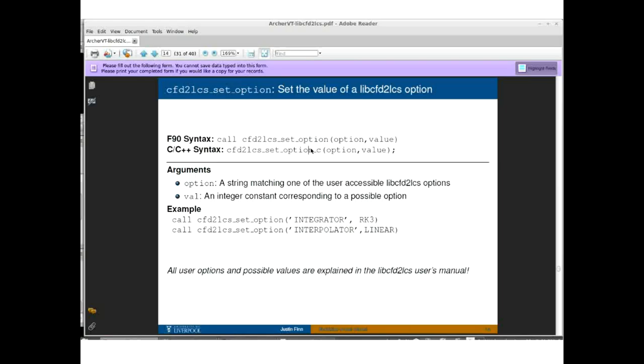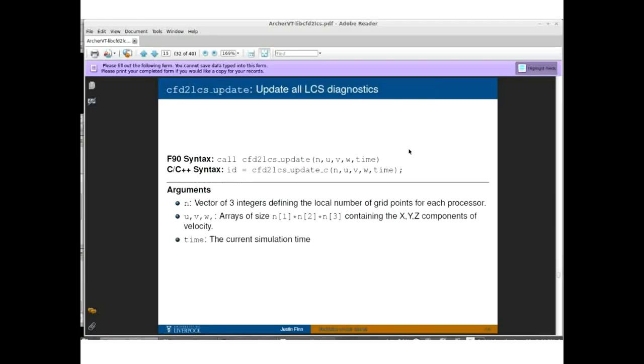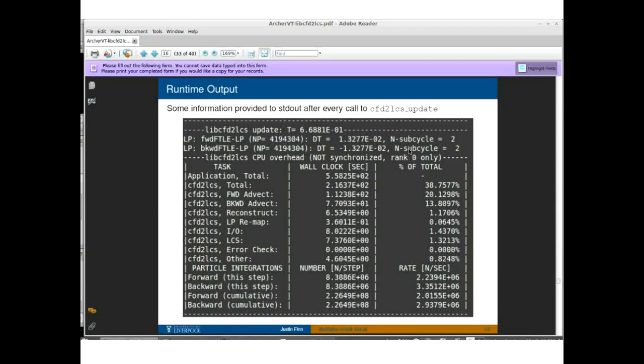That's really the main calls that you'll need to make to your library to get the computation running. There's also another important subroutine you can access called cfd2lcs_set_option. This lets you modify a number of accessible cfd2lcs options using a fairly straightforward string value or string constant method. Basically, if we want to modify the integration scheme, I would pass a string called integrator and then a constant, which I'll call RK3. These are all defined in the header file that you load at the beginning of your program. You can look in the libcfd2lcs user manual and see all the options that are available to you and then use this key value type approach to modify these as the simulation goes.